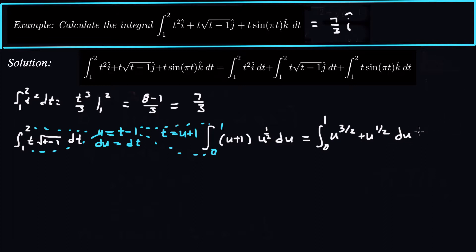We get the integral, it's going to be 2 fifths u to the 5 halves plus 2 thirds u to the 3 halves from 0 to 1. Now if I plug in 1 for u, that's going to be 1 regardless of the power. If I plug in u equals 0, they're both 0. So this turns out to be pretty easy to evaluate. We just get 2 fifths times 1 plus 2 thirds times 1 minus 0 minus 0. 2 fifths plus 2 thirds turns out to be 16 over 15. So plus 16 over 15 j hat.